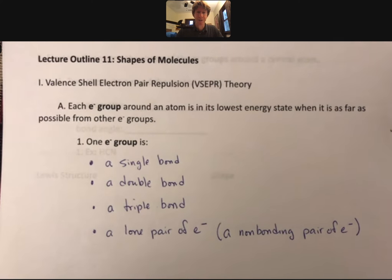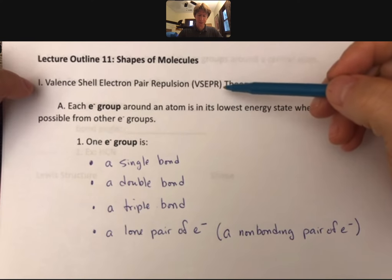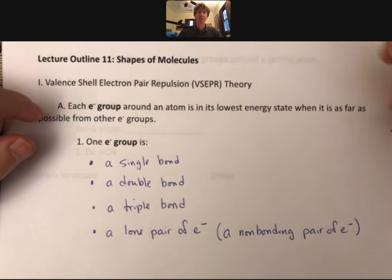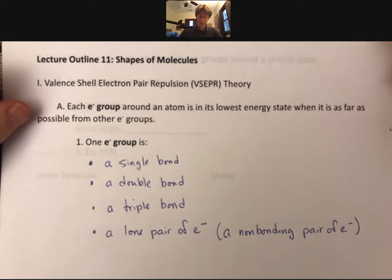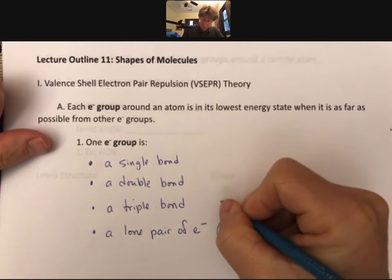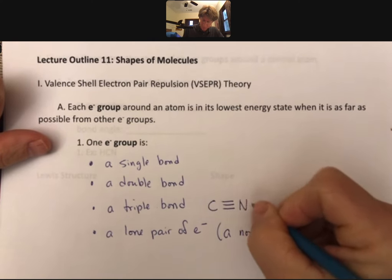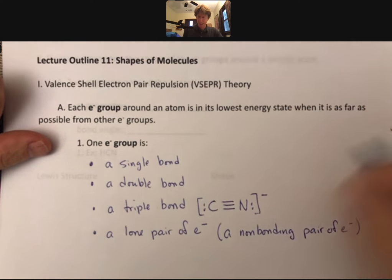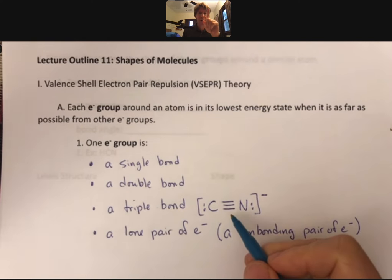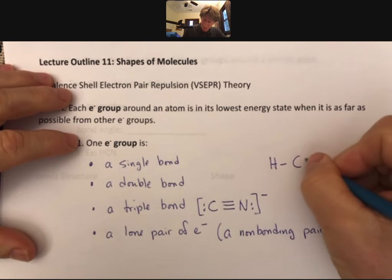For this theory and how we will determine shapes, each of these things is equivalent. So a triple bond, which we might draw for the cyanide ion, a triple bond is one electron group. And actually, let me show you one other thing.